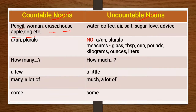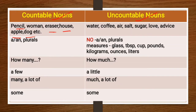With countable nouns, we can use numbers or we can make their plurals. For example, we can say 'I have two pencils,' using the number two with the plural of pencil. It means we can easily use numbers and make their plurals by adding S or ES.